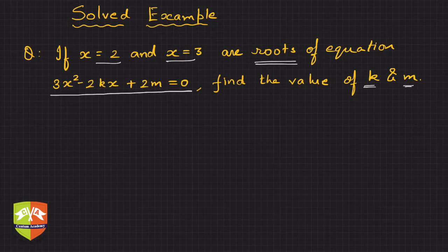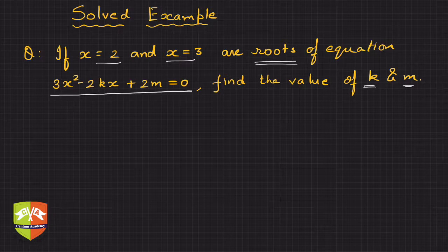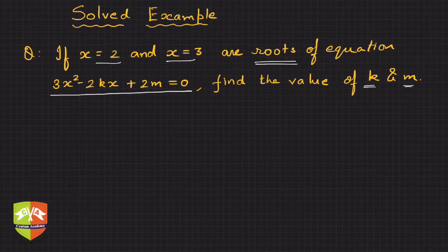So basically, roots are given and we have to find out unknowns k and m. What is meant by x = 2 and x = 3 being the roots of this equation? That means if we put x = 2 in this equation, you should get LHS equal to RHS.